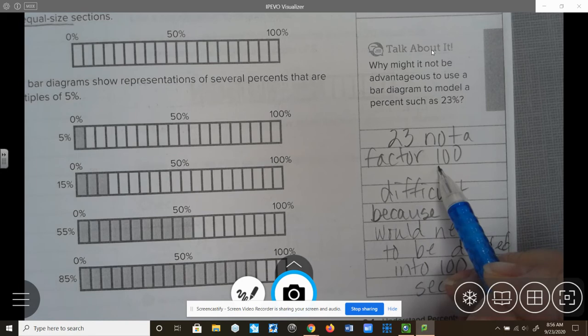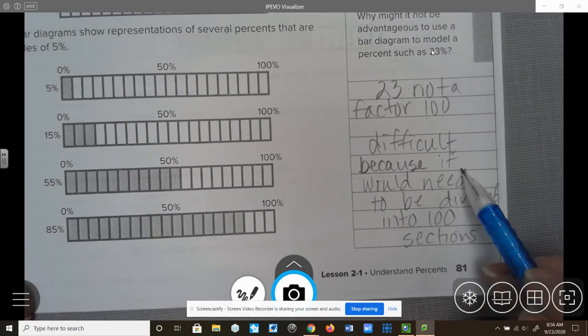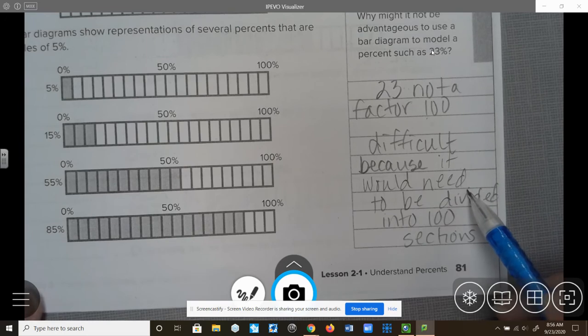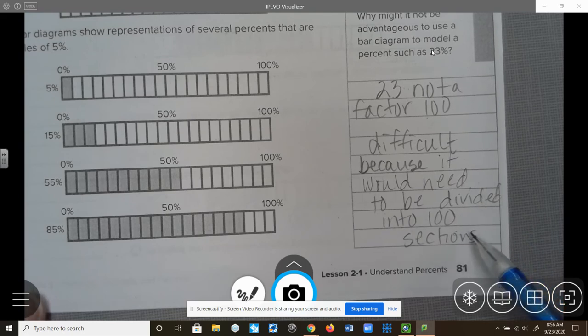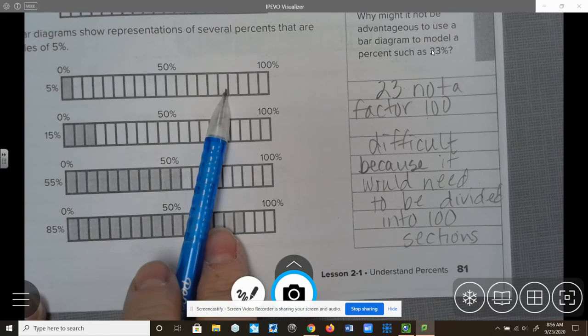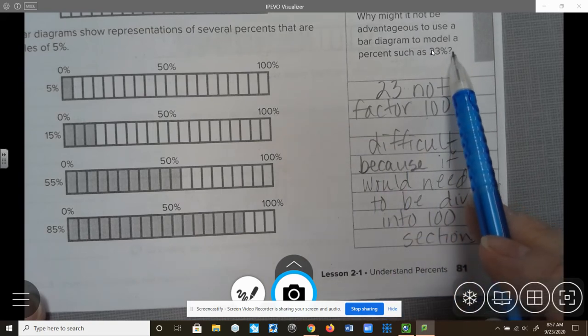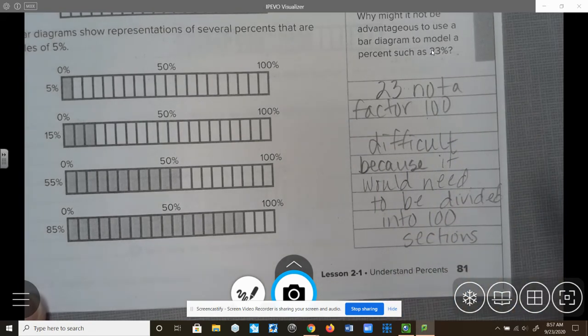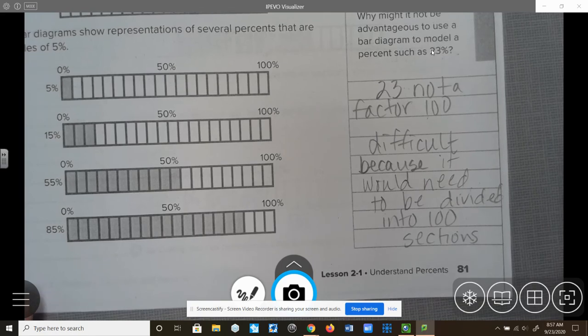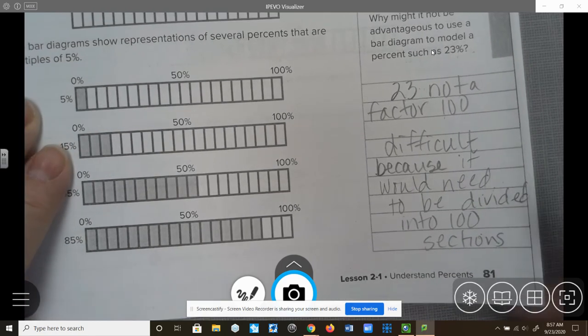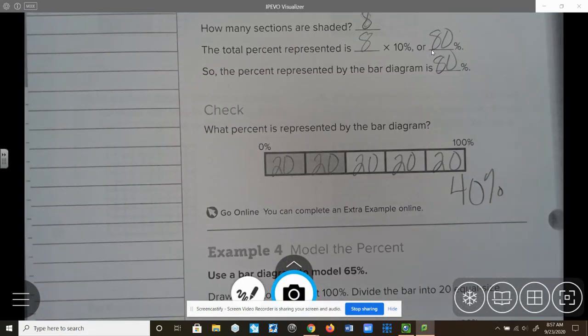So I was thinking 23 is not a factor of 100. I cannot evenly go into 100 using 23. So it would be very difficult to create a bar model for 23% because I would need to divide that bar model into 100 sections. And that would be very difficult. So over here, instead of 20, I would have to make 100 sections. And that would be really difficult. So creating a bar diagram for 23% probably would not be the best way to do it. So we're finished with page 81. Let's go on to page 82.